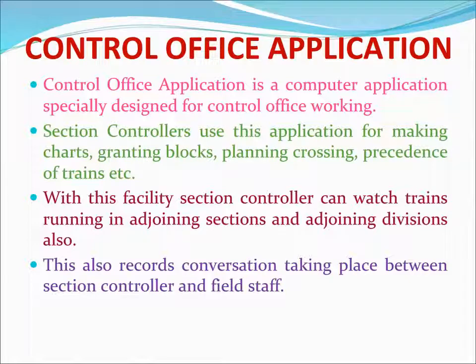The Control Office Application (COA) is a computer application specially designed for control office working. Section Controllers use this application for marking charts, granting blocks, planning crossings, precedence of trains, etc. With this facility, the Section Controller can watch trains running in adjoining sections and adjoining divisions also. This also requires conversation taking place between the Section Controller and field staff.